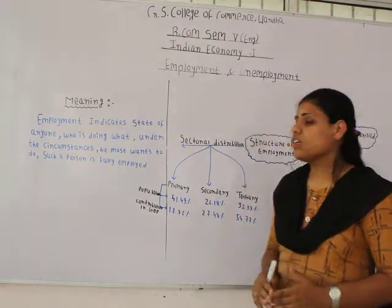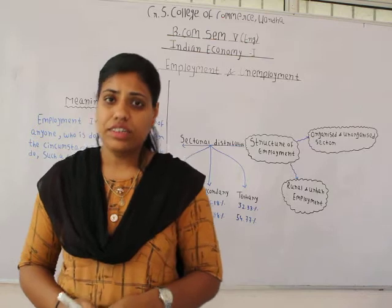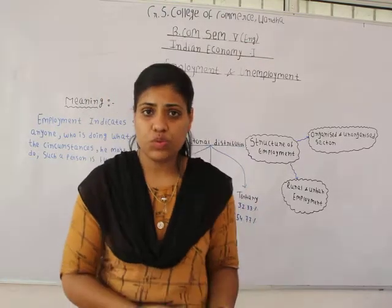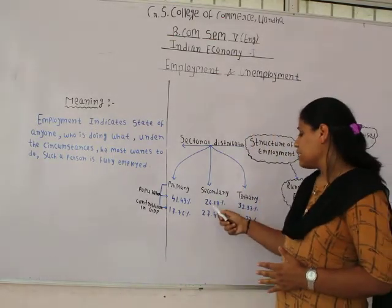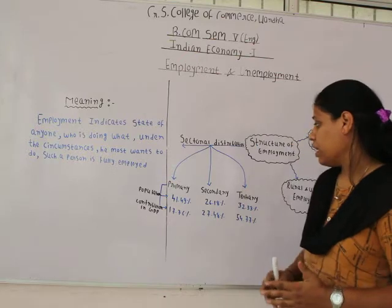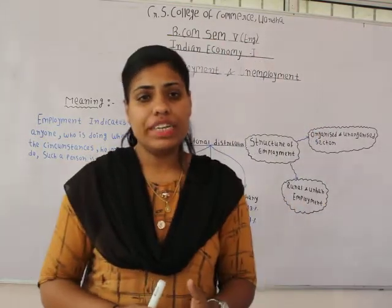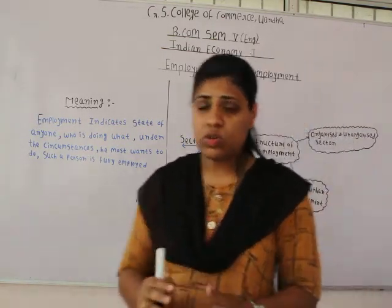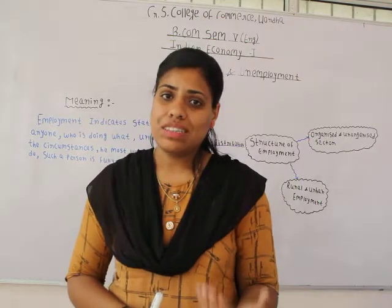The next sector is the secondary sector, which basically consists of industries and construction. About 26.18% of the population depends on this sector for their livelihood. As per 2020 data, the secondary sector contributes 27.48% to India's GDP. It is also one of the important sectors in the Indian economy.